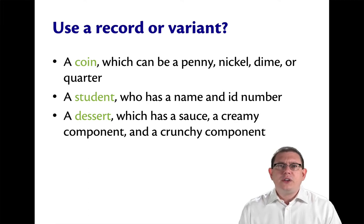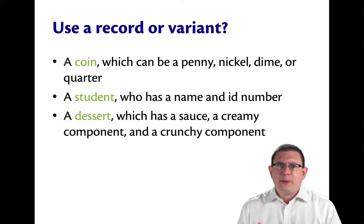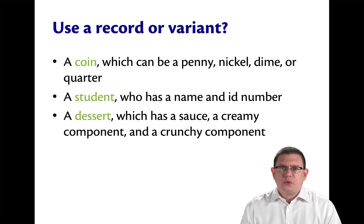Of course, if I tried to use a variant and had one constructor for name and one constructor for ID number, then I'd never be able to have those two pieces of data simultaneously. I need to have both of them at the same time. That leads me to choose record.